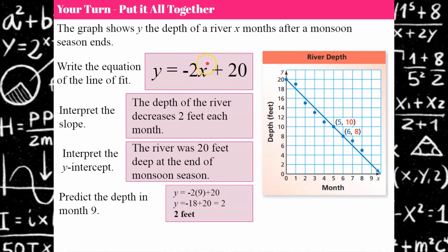And then let's predict the depth in month nine. So I'm going to go back up here. x is my number of months. Replace x with 9. 2 times negative 9 is negative 18. Add 20 and you get 2. So I can predict that in month nine, the depth of the river after nine months after the monsoon will be two feet deep.